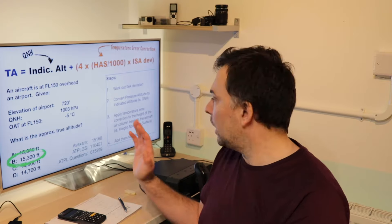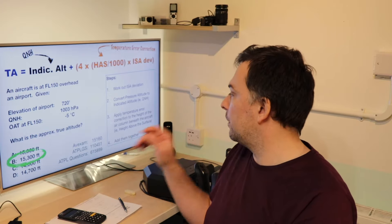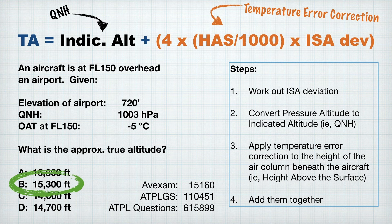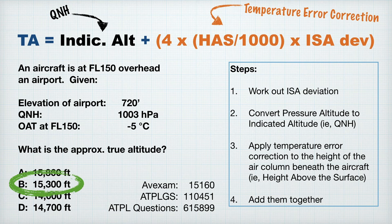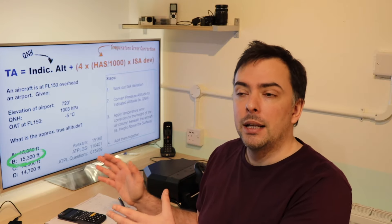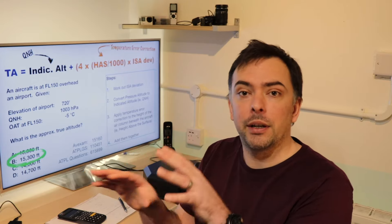How did you do with that? If you want that question in any of the question banks, you can see that on AVEXAM, that question is number 15,160. It's on ATPL-GS, it's number 110,451. On ATPL-Questions, it's 615,899. And it's probably on Bristol as well. If you found this question in Bristol, then I'd love it if you could leave it in the comments below.